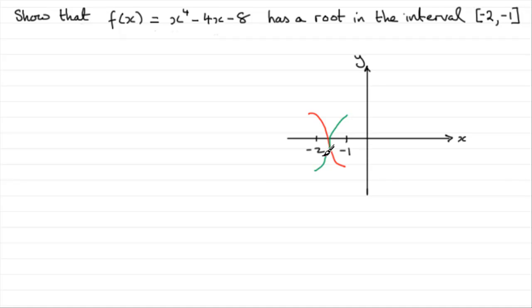This is called the change of sign method, because if it changes sign over this interval, then we know that it's crossed the x-axis in that interval. So, in order to do this then, what I'm going to do is first work out what f(-2) is.